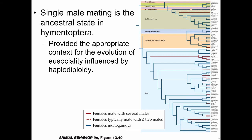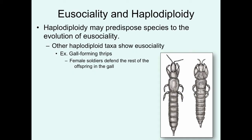How common is multiple mating versus monogamy in Hymenoptera? In a comparative analysis across diverse species, single-male mating — monogamy — appears to be the ancestral state in Hymenoptera, as shown by the blue branches in the phylogeny. This provides the appropriate context for the evolution of eusociality influenced by haplodiploidy, giving this genetic predisposition that makes indirect fitness so rewarding and could lead to the evolution of eusociality in many lineages.